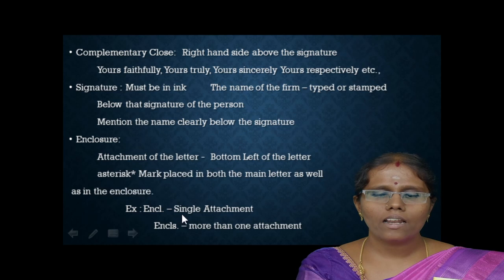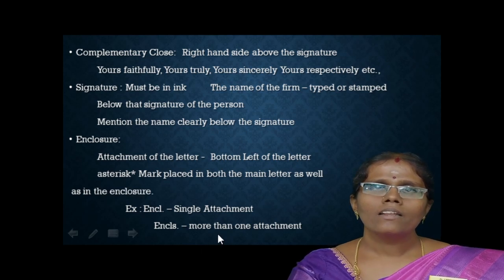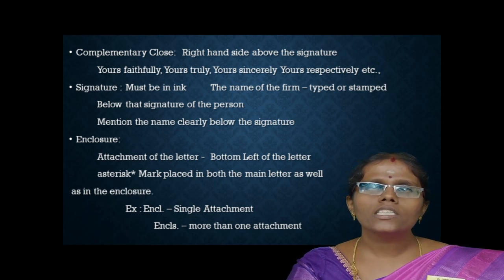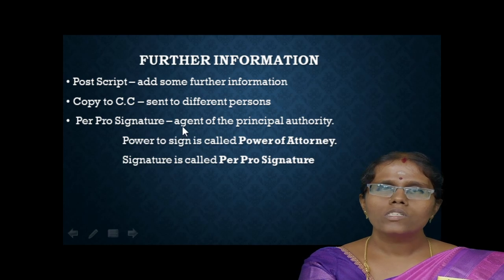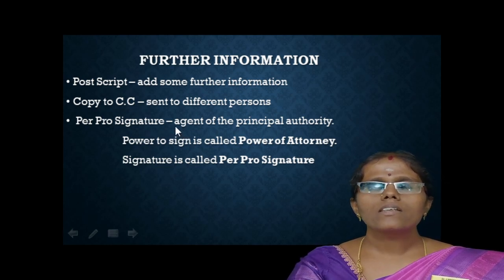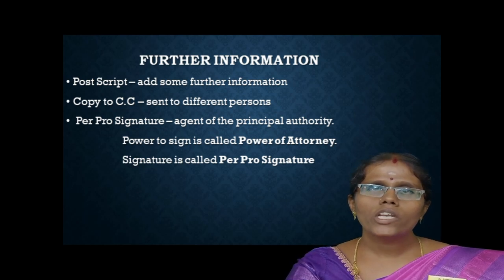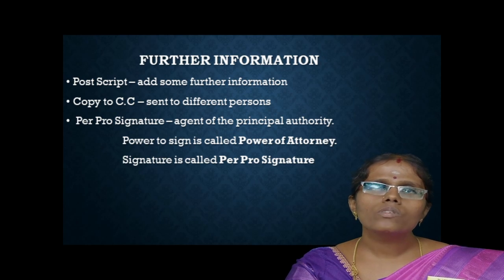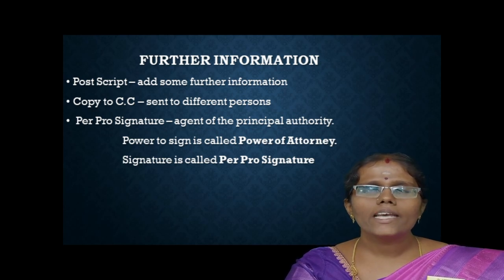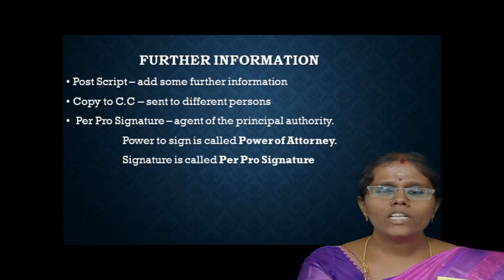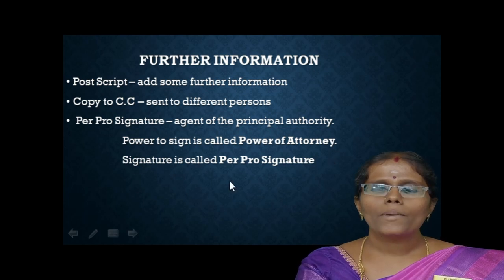We may use 'Encl.' as a short form for enclosure — 'Encl.' with a dot for a single document, and for more than one attachment accordingly. In the business letter, we may also add further information such as postscript, copy to, or per pro signature. Postscript means adding further information which was not mentioned in the body. CC is written when the letter is sent to different persons. Per pro signature is made by the agent of the principal authority, and the power to sign is called power of attorney.